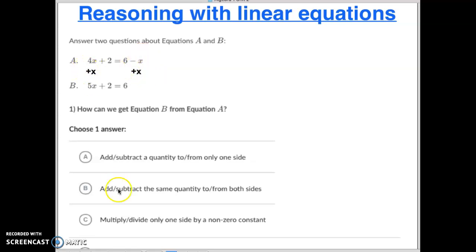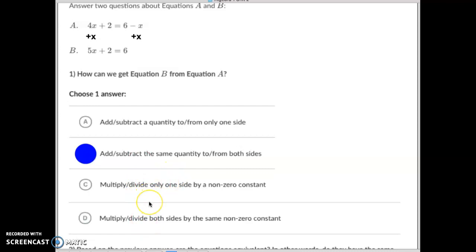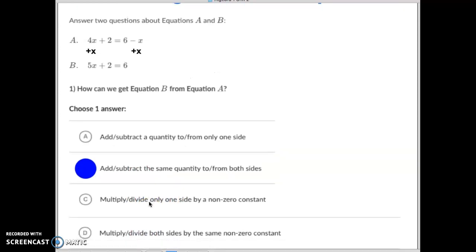But they added X to both sides. So for your choices of these four choices, did they add to one side? Nope, they added to both sides. So that would be the answer. They didn't multiply, they just added to both sides. Now, that's portion one of that.